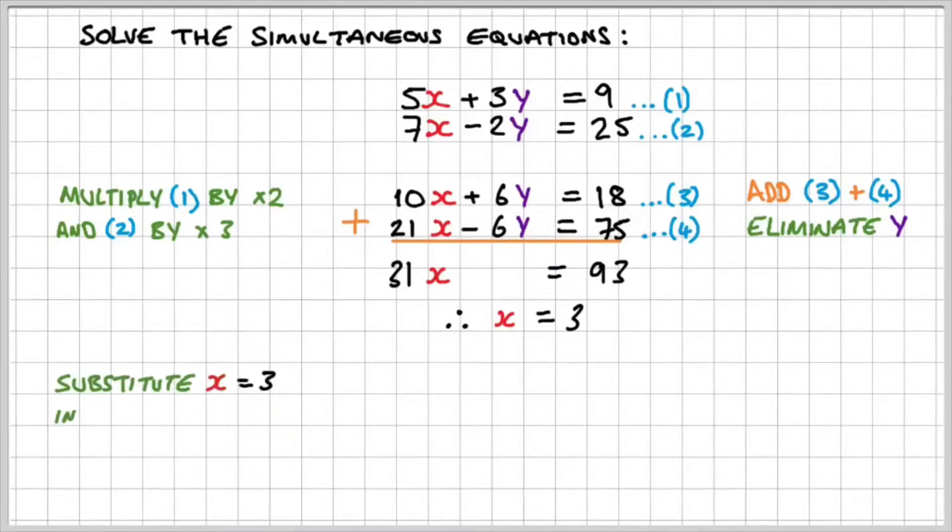So now we can substitute x is equal to 3 into equation 1. That's going to give us 5 times 3 plus 3y is equal to 9. 15 plus 3y is equal to 9. If I subtract 15 from both sides, I get 3y is equal to minus 6.